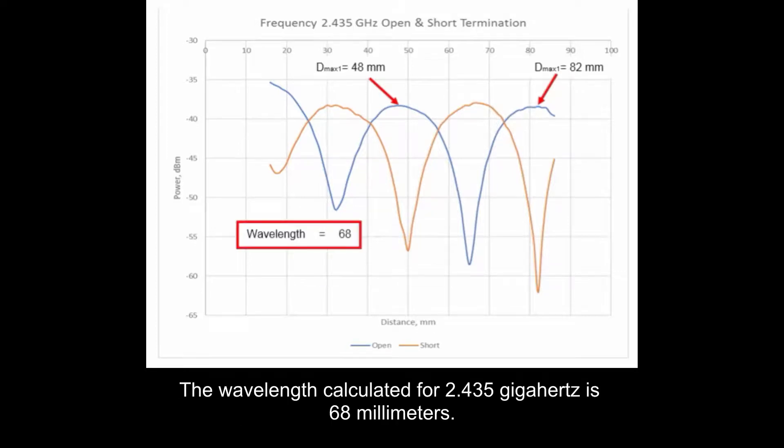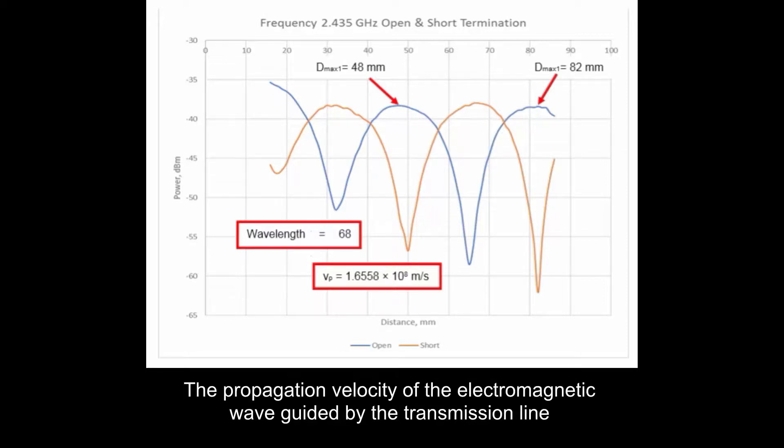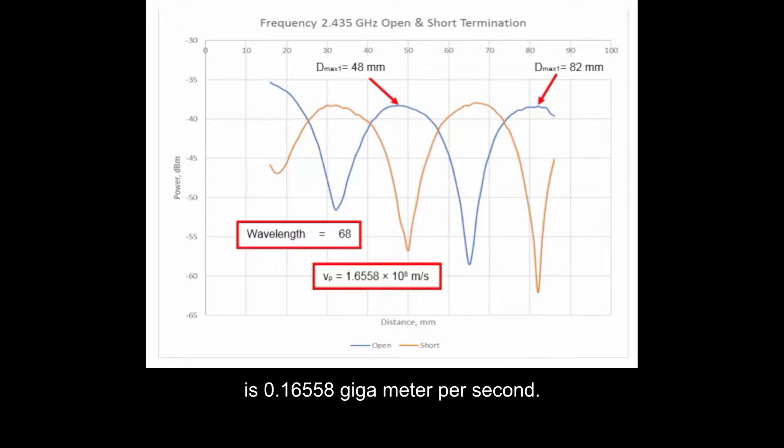The wavelength calculated for 2.435 GHz is 68 mm. Use the wavelength obtained to calculate the propagation velocity. The propagation velocity of the electromagnetic wave guided by the transmission line is 0.16558 GHz per second.